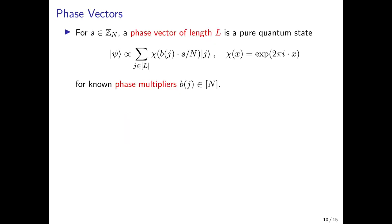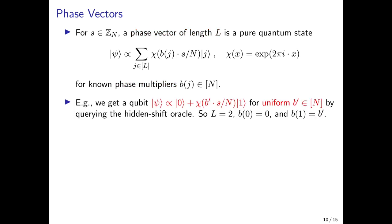Now let's take a closer look at these objects called phase vectors and how collimation works on them. For a secret group element S, a phase vector of length L is merely a pure quantum state on L different basis elements, ket j here, where each basis element has a phase factor attached to it, and the phase is given by a known multiplier b_j. For example, by querying the hidden shift oracle we get a single qubit whose phase on 0 is 0, and whose phase on 1 is some known uniformly random value b' between 0 and N.